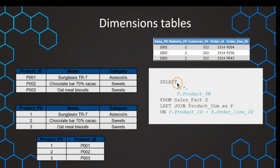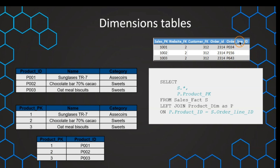We give the tables aliases — p for the product table and s for the sales table — so we can reference column names more easily. We create the join based on the product ID column in the lookup table and the order line ID in the sales table. This lets us match and replace natural key values with the correct surrogate key values.